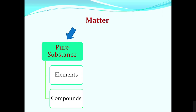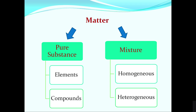Elements like oxygen gas, hydrogen gas, iron, and gold are pure substances. Compounds can also be pure — for example, sodium chloride (common table salt) and carbon dioxide gas. These are pure substances because they consist of a single type of element or compound.